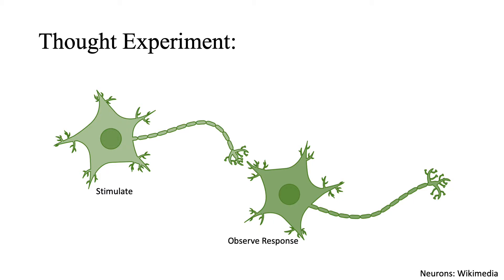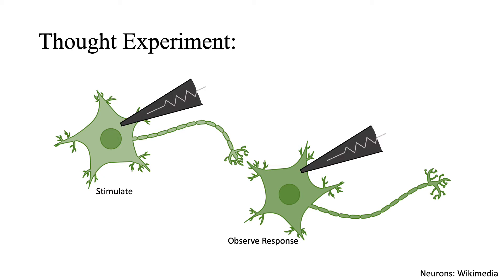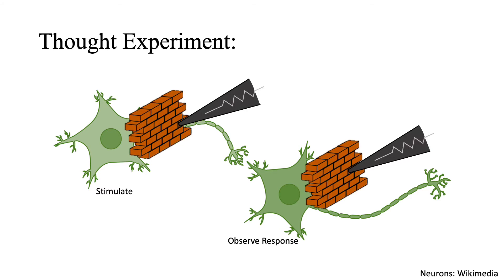Alternatively, what if you wanted to prove that two neurons were synapsing with each other? You could use patch clamp electrophysiology and record from both of these cells simultaneously. Stimulating the one upstream while recording from the one downstream would allow you to test this idea. However, this isn't always possible. Sometimes there exist physical or technical barriers between you and your cells of interest.